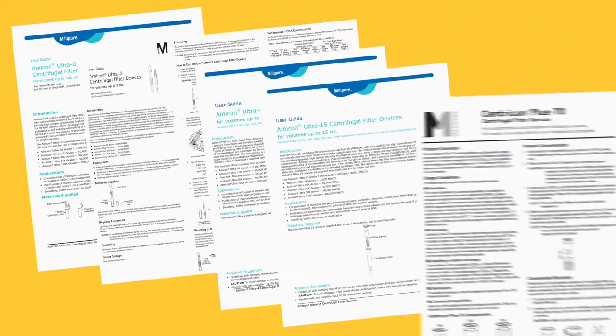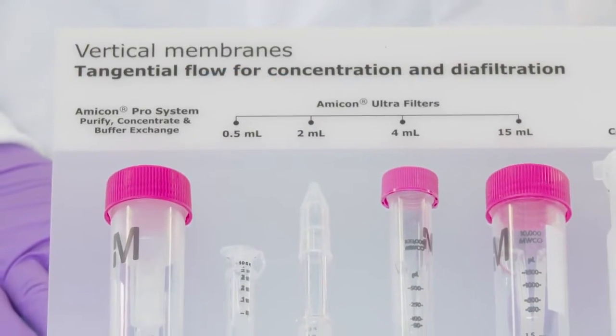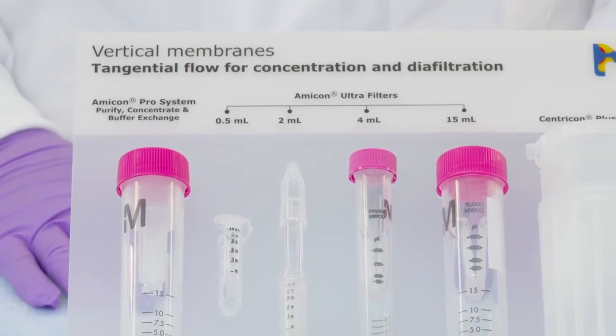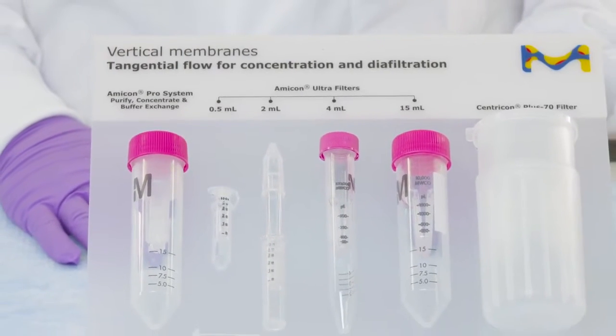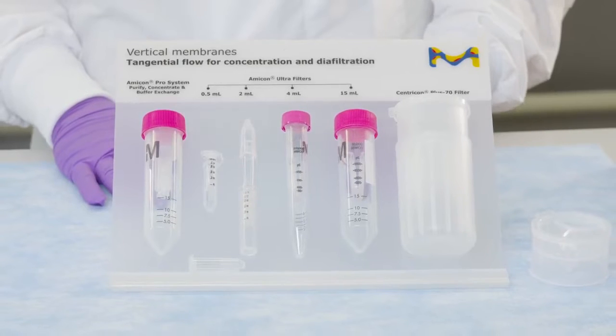Refer to the Amicon user's guide for specific centrifuge speed settings. Besides filter rating or molecular weight cutoff, device selection can be determined by processing volume needs or desired concentration factors. Sometimes it's based on equipment availability.